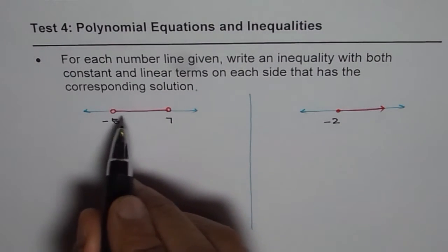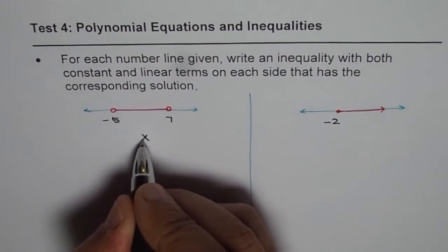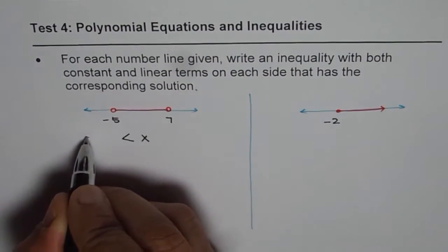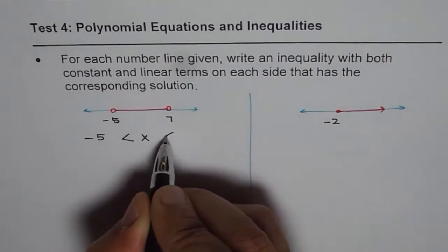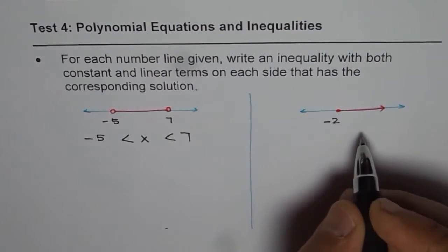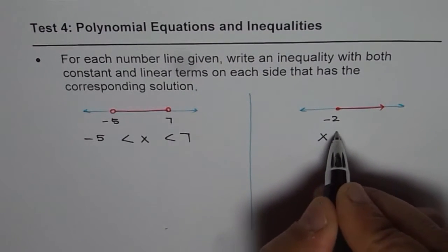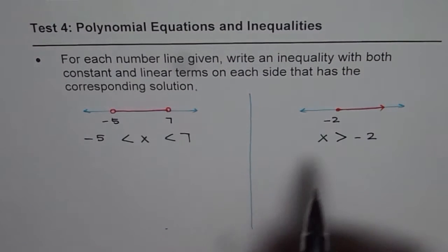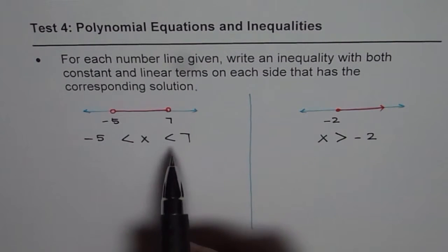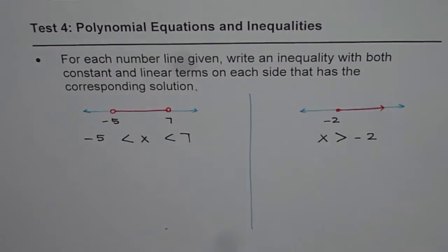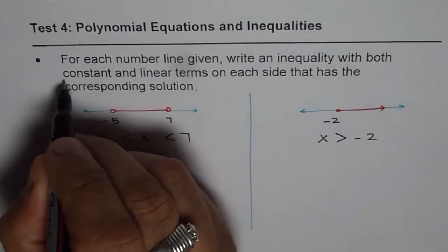Now, on this number line, the solution is that x should be greater than -5 and should be less than 7. On this, the solution is that x is greater than -2. So, on both sides, we want both constant as well as linear terms.